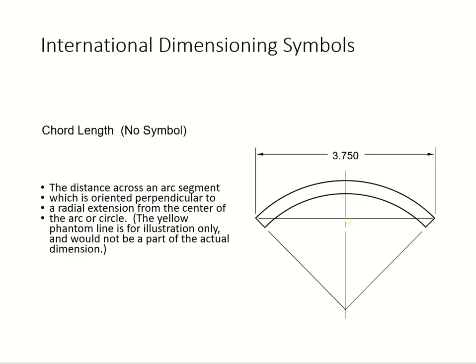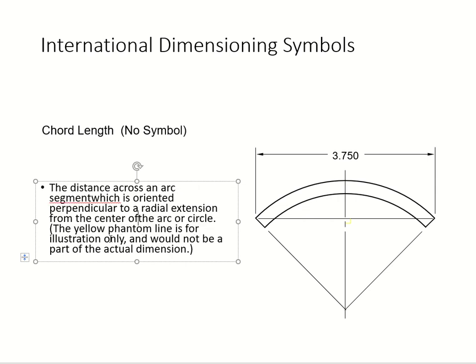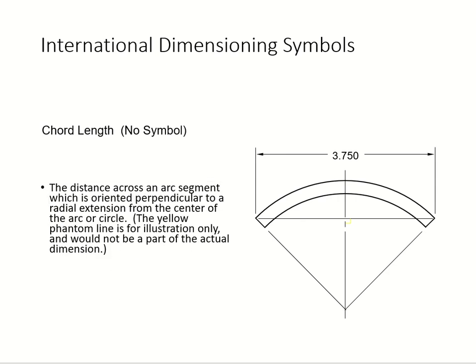The next is chord length. There's no special symbol for chord length — you use regular extension lines with a gap, and the dimension value is placed inside the extension line. That's the chord length. No special symbol is used for chord length.